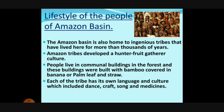The Amazon Basin is home to indigenous tribes — indigenous meaning the original natives of that place, as opposed to foreign. These tribes have lived here for more than thousands of years. Amazon tribes developed a hunter-fruit-gatherer culture. People live in communal buildings in the forest, built with bamboo covered in banana or palm leaf and straw. Each tribe has its own language and culture, which includes dance, craft, song, and medicine.